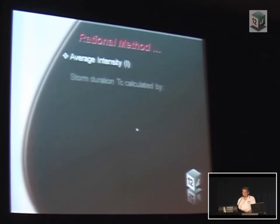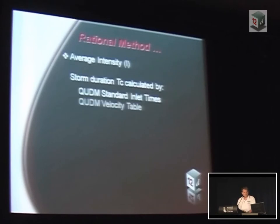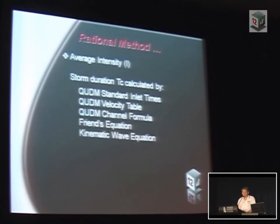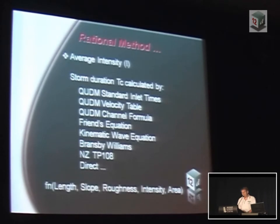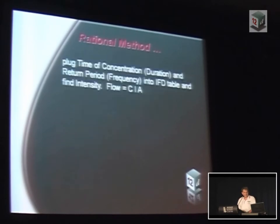The intensity is just the storm duration at a point, so we calculate a TC. We can calculate it by a bunch of different methods — these are the ones within 12D at the moment. They're all basically a function of length, slope, roughness, intensity, and so on, and they all get wildly different answers. So we usually use five minutes or something like that. We plug them into our IFD table and we wind up with our flow from CIA.